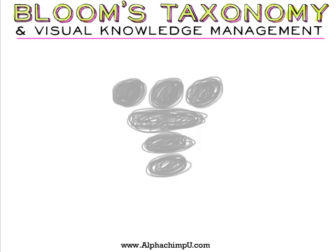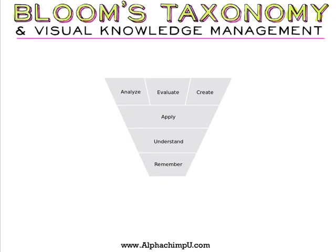Returning back to our little model here for cognition — do you remember the three images? We had the three-toed sloth, which we used for the footprint. The other two images were an easy cake and an umbrella in the rain. I used this mnemonic to remember the parts of this model so I can recreate it. These are the actual parts of the Bloom's Taxonomy section that deals with cognition, and today we're going to focus on the bottom part — which is memory.